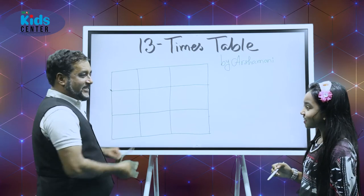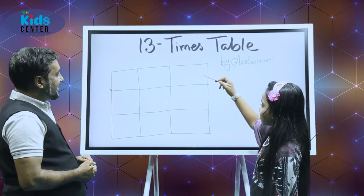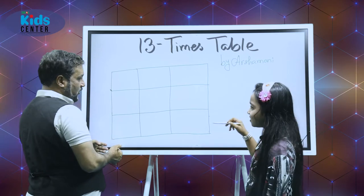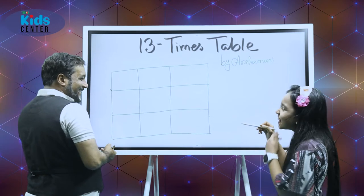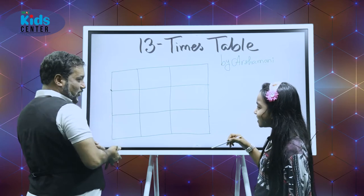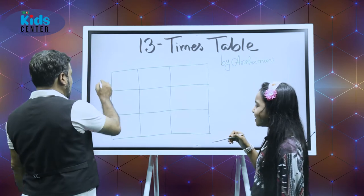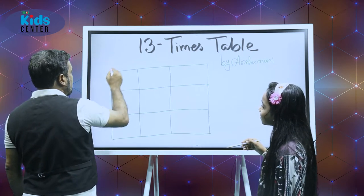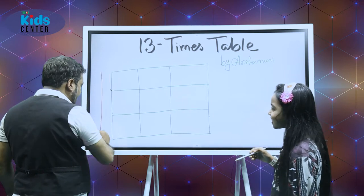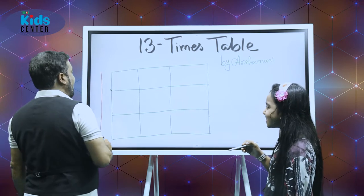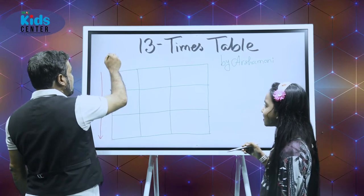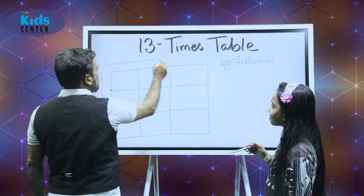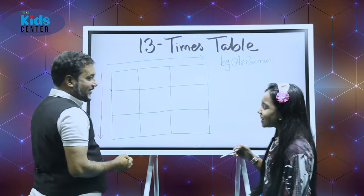Could you be our teacher, please? So first of all, we need three rows and three columns. What are the rows? These are the rows? No. These are the columns. So let's change the color a bit. These are rows, Ashamani, right? No, these are columns. Then these are maybe rows, if I'm not wrong. These are rows, right? Yeah.